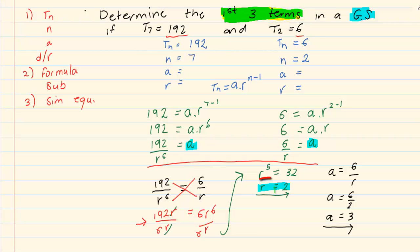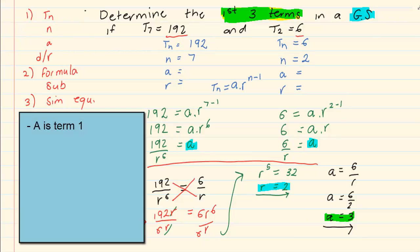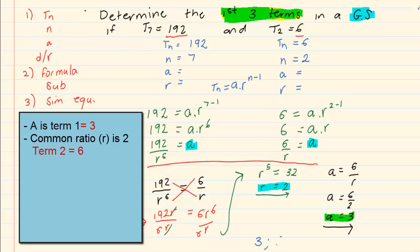All we have done is, we have got R and we have got A. We have not yet answered the question. Now, if you go back, you know A is your term 1. So we know term 1 is 3. Because our common ratio is 2, term 2 is going to be 6 and term 3 is going to be 12.